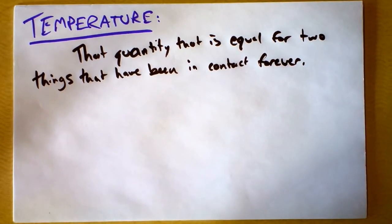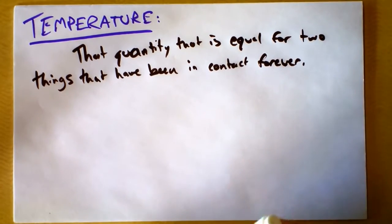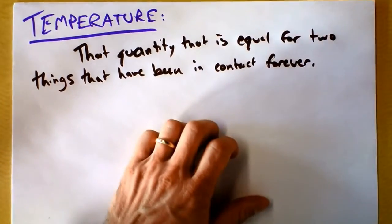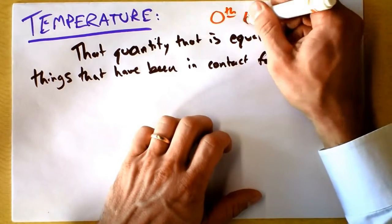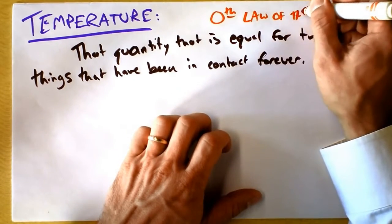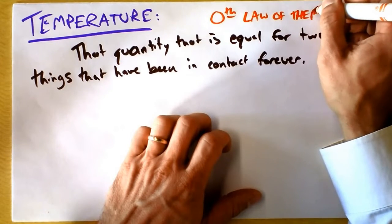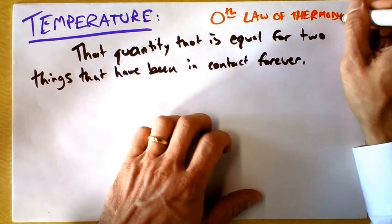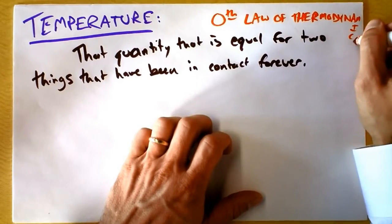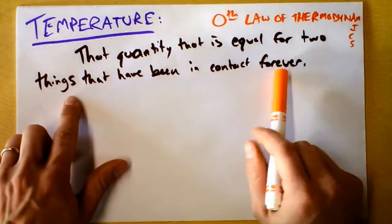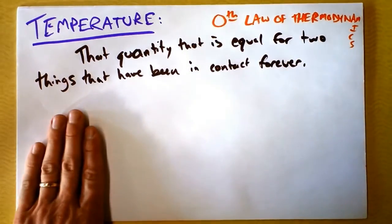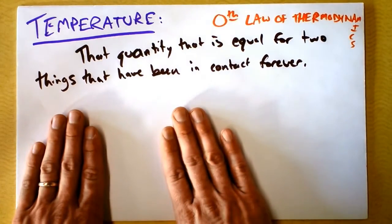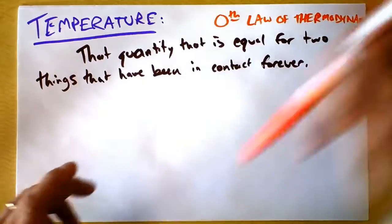You don't really have a very practical definition there, but that's all I can say about temperature. Some people call this the zeroth law of thermodynamics — thermodynamics means the study of the flow of heat. One way of saying it is: temperature is the quantity that's equal for two things that have been in contact forever. Equivalently, if one substance has a high temperature and another has a low temperature, heat will flow from the hot thing to the cold thing.